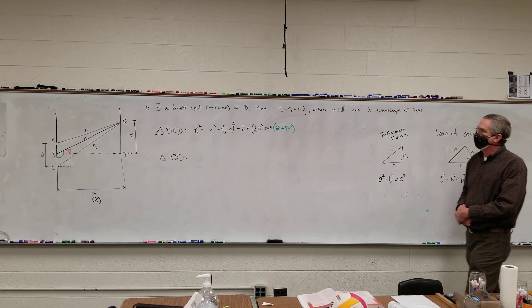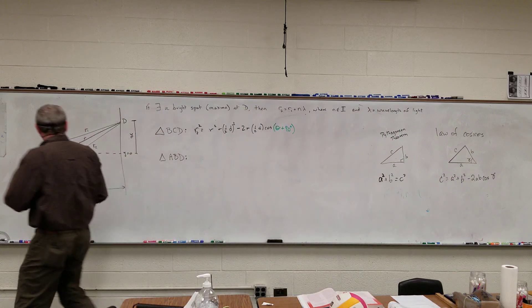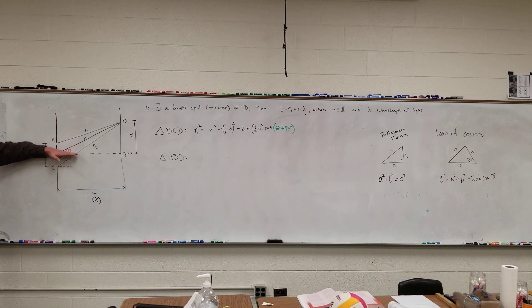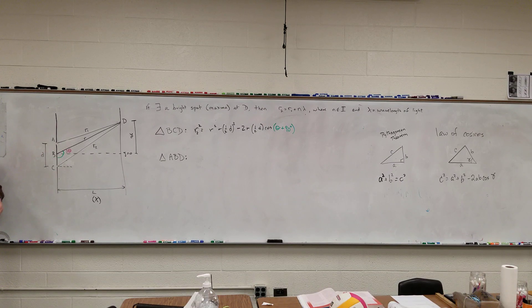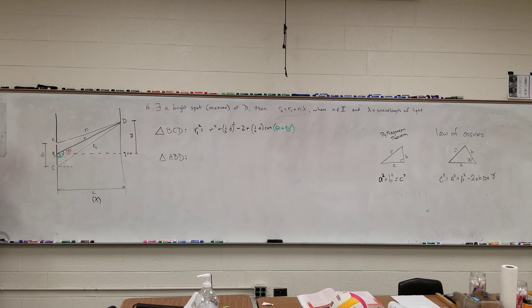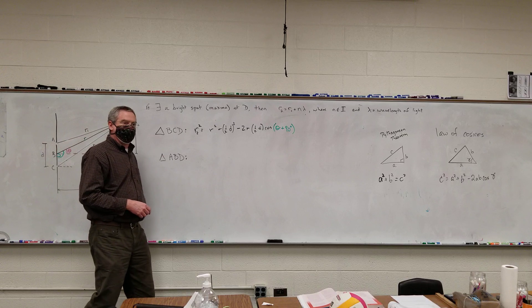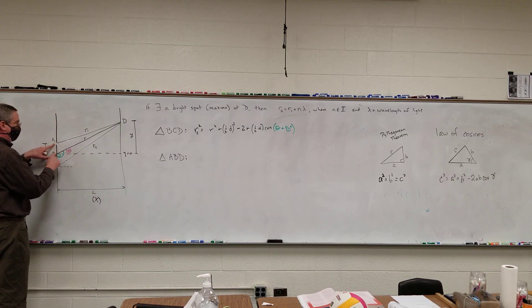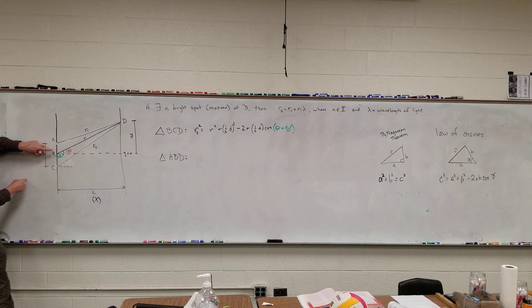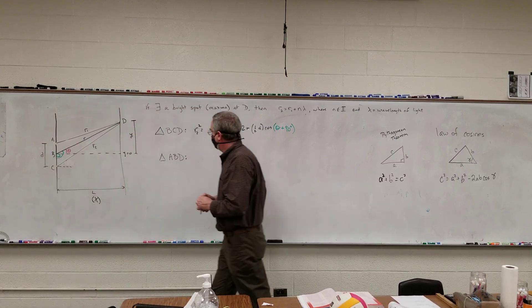How did I get the plus 90? I'm defining theta as being from the horizontal, so it's theta from the original plus 90 degrees. The right angle is explicitly there. Similarly, I can do something very similar for triangle ABD — from the top slit to the middle to point D over there — giving R1 squared.